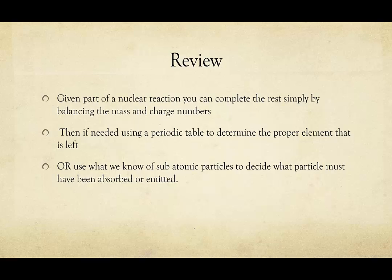So in review, given a part of a nuclear reaction, even one that we haven't seen before, you can complete the rest of it simply by balancing the mass and charge numbers. Then if needed, you can use a periodic table to determine the proper element that is left, if it isn't just one of the subatomic particles that we talked about.